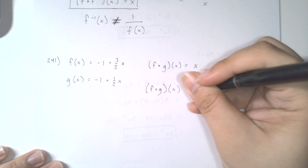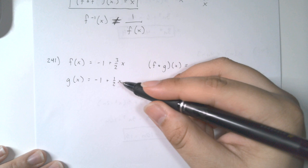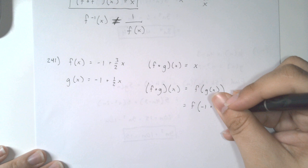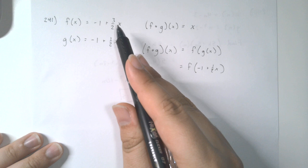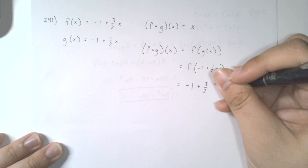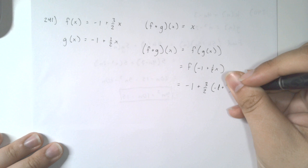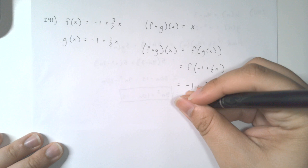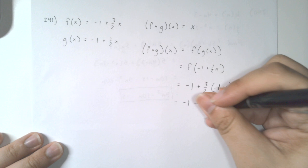So if we do f of g of x, that means we're going to plug g inside of x. We know g of x is negative 1 plus 1 half x, so this means f of negative 1 plus 1 half x. Now we want to replace x in f with all of that. This is equal to negative 1 plus 3 over 2, and instead of writing an x we write negative 1 plus 1 half x. When we simplify, negative 1 times 3 over 2 is just minus 3 over 2.